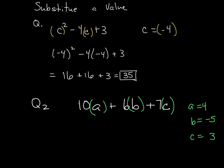So now I rewrite this as 10 parentheses, a is 4, plus 6 times b, which is negative 5, plus 7 times 3. And again, always put those in parentheses. So I am left with 10 times 4, which is 40. And then I have 6 times negative 5, which is a negative 30. And lastly, I have 7 times 3, which is 21.